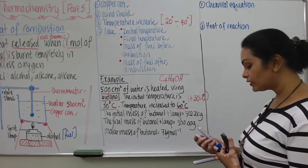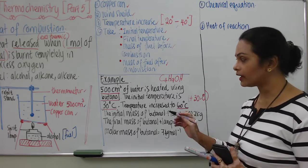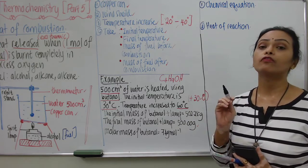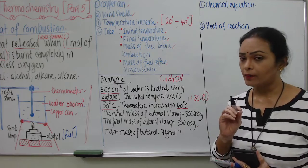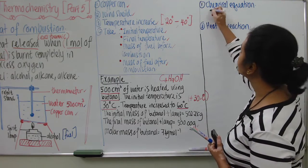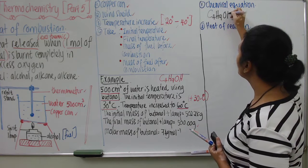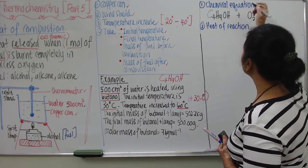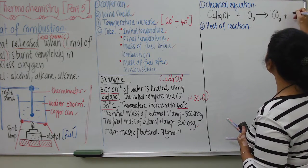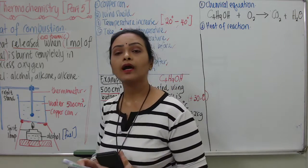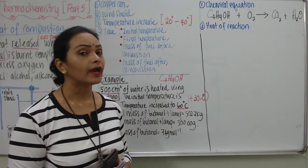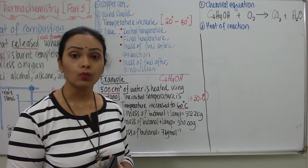Before starting any calculation regarding heat of combustion, it is advisable for students to write down the chemical equation for the reaction. In chapter 2, teachers taught students how to balance the equation for a combustion process. So: C4H9OH reacts with oxygen to produce carbon dioxide and water. When teacher writes carbon dioxide and water, that means we are discussing complete combustion.